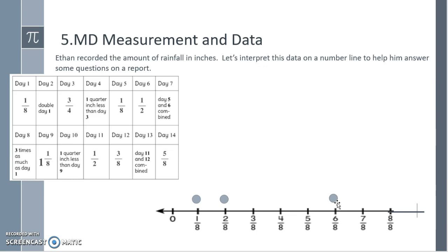On day four it's a quarter inch less than day three. So day three was three fourths, so a quarter less would be four eighths. Day five is one eighth, so we'll put another portion on one eighth. Day six is one half which is the same as four eighths. Day seven is day five and six combined.